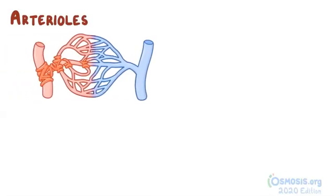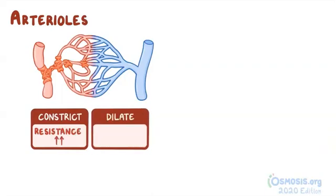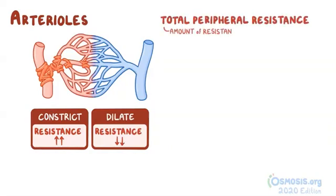Now, the arterioles that come before the capillaries act as floodgates, regulating blood flow into the capillaries. So if the arterioles constrict, the resistance increases, and if they dilate, the resistance decreases. Therefore, the arterioles generally determine total peripheral resistance, or the amount of resistance opposing blood flow. This means arterioles play a key role in regulating the blood flow to an organ.